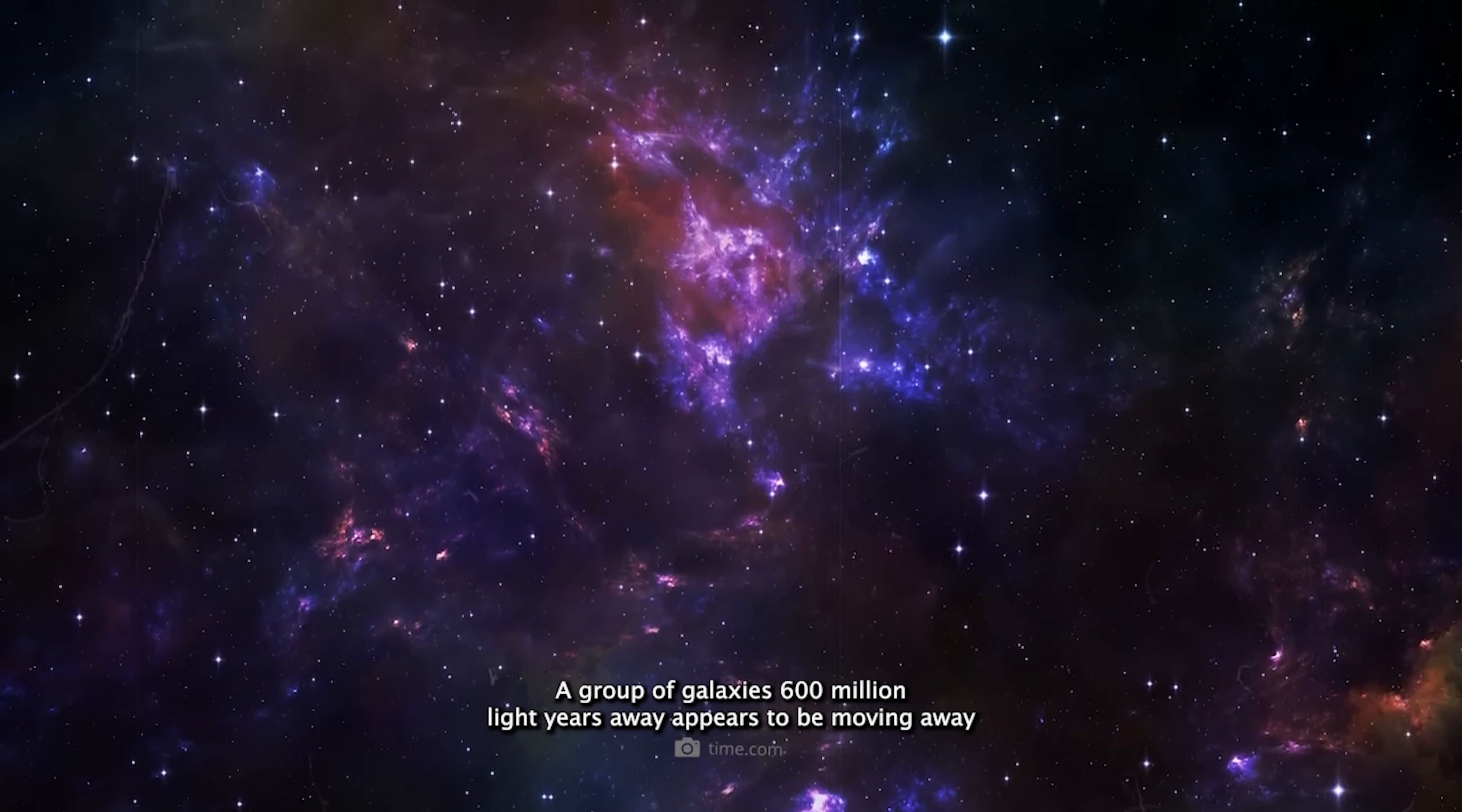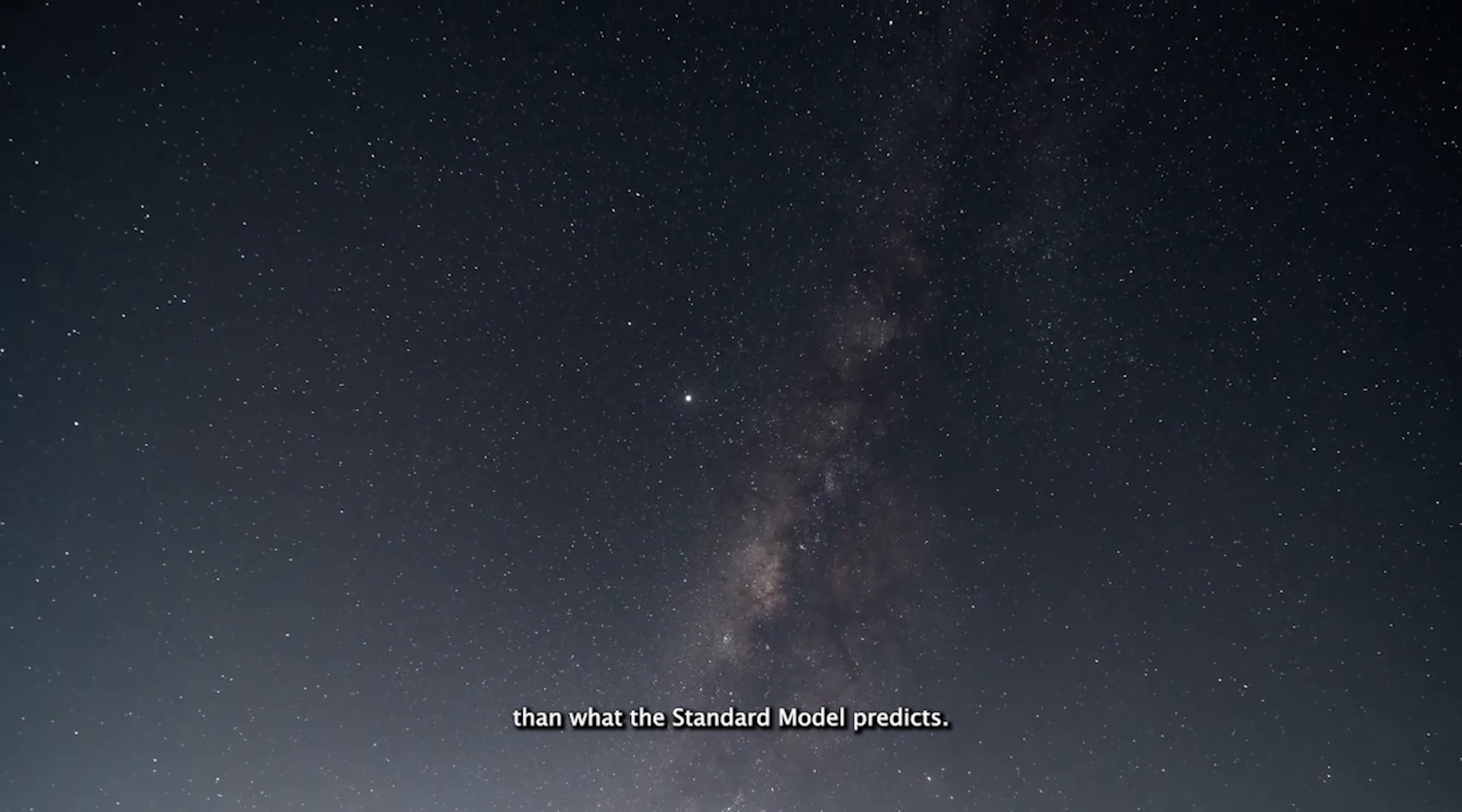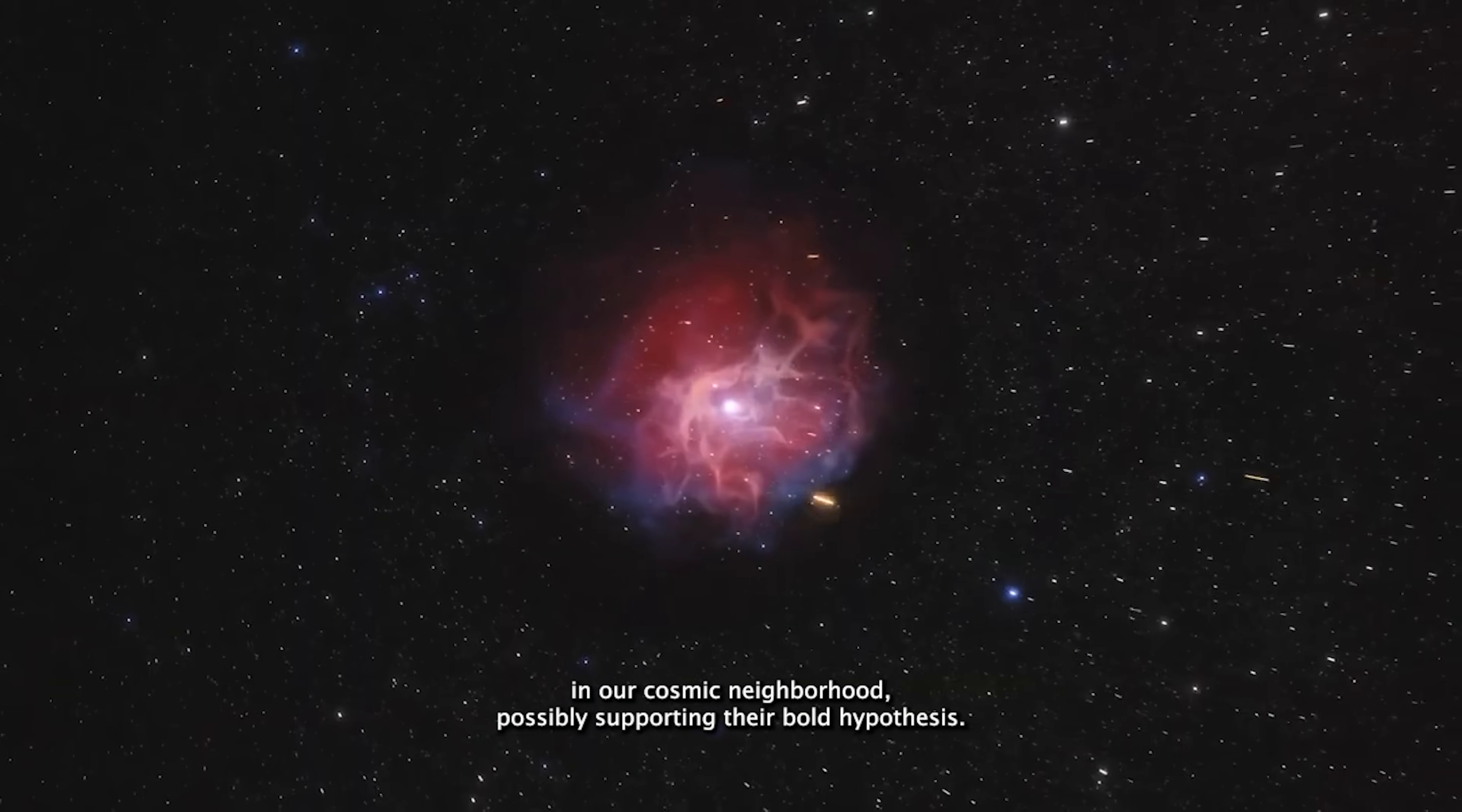A group of galaxies, 600 million light-years away, appears to be moving away from us at speeds four times faster than what the Standard Model predicts. This anomaly suggests that something unusual really is happening in our cosmic neighborhood, possibly supporting their bold hypothesis.